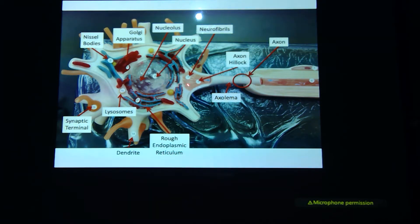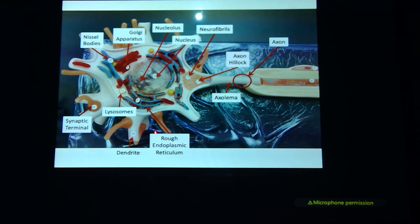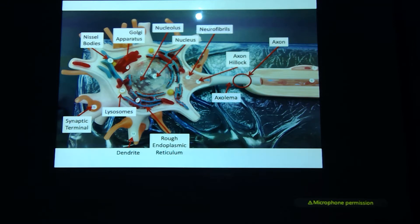The axon hillock is that first segment right here. We still have the synaptic terminals and the dendrites coming off of that. These red bean-looking things are going to be our mitochondria. You don't see them opened up until you get into the axon, which I'll show you in just a minute.